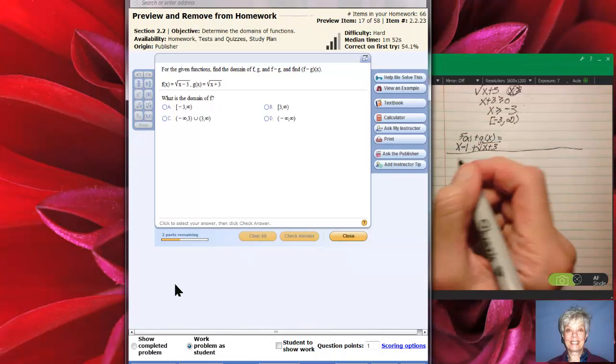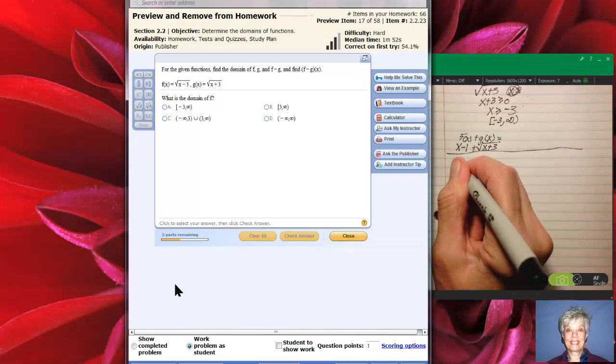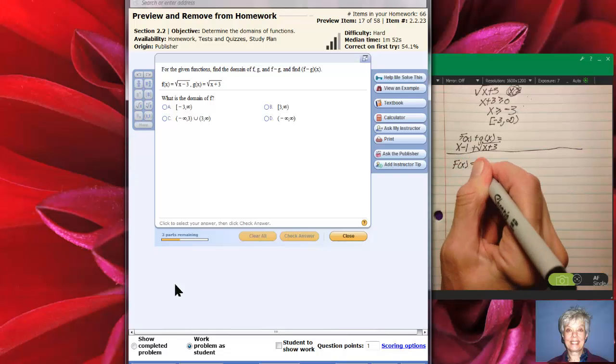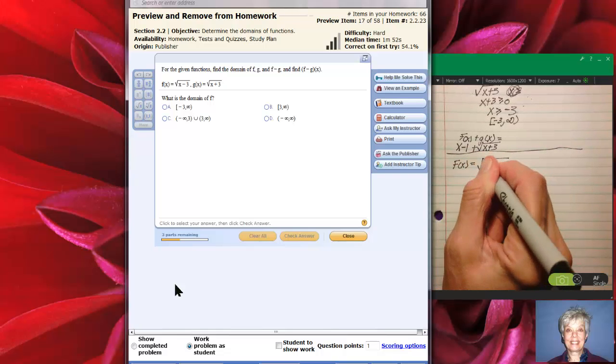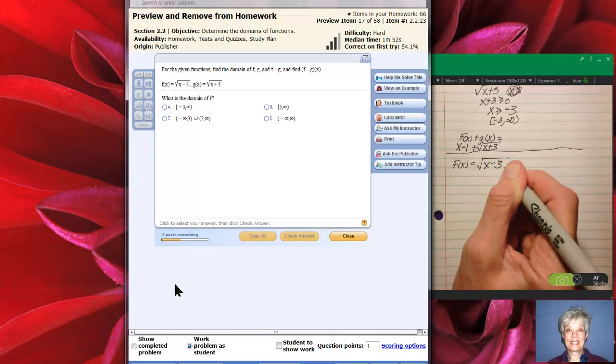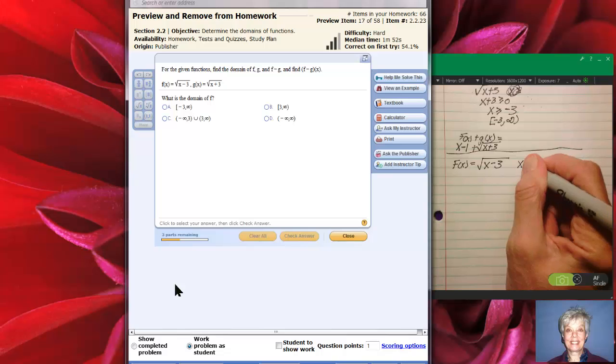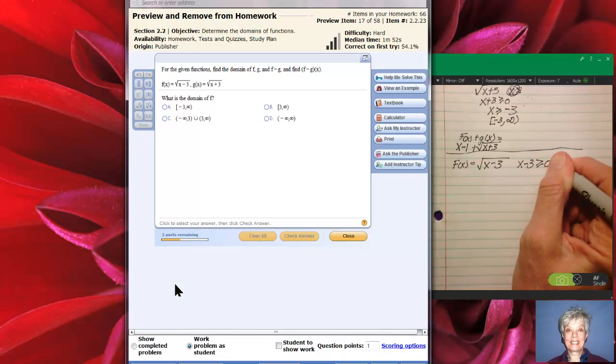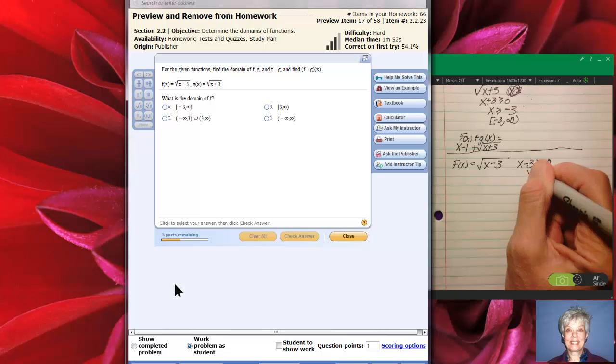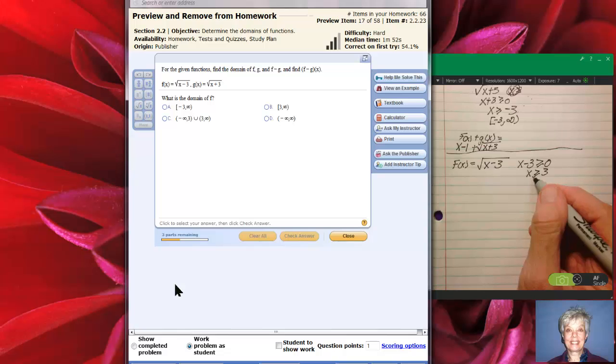Okay, now f of x equals the square root of x minus 3. So the domain of f of x is going to be x minus 3 greater than or equal to 0 which means x will be equal to or greater than 3. Which means the domain of f is going to be 3 to infinity. And here it is right here.